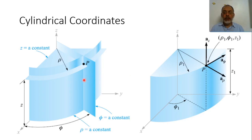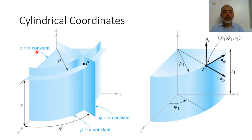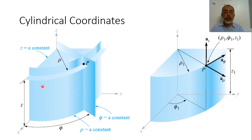The outer surface of the cylinder can be represented as a constant rho surface. The top or bottom surface of the cylinder can be represented as a constant z surface. And the intersection plane can be represented with a constant phi plane. These are the different representations for constant surfaces in cylindrical coordinates.